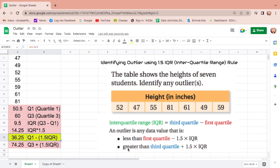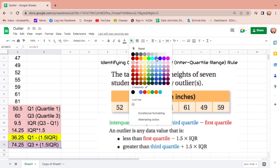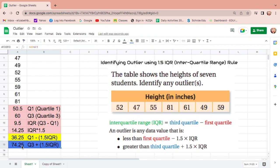How about outliers greater than third quartile plus 1.5 times IQR, and that is 74.25. Let me change the color. Are there numbers greater than 74.25? That is only 81. So therefore, from this dataset, the outlier of the height in inches is 81.